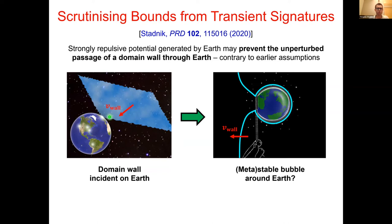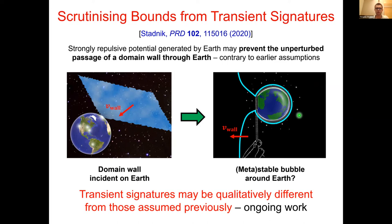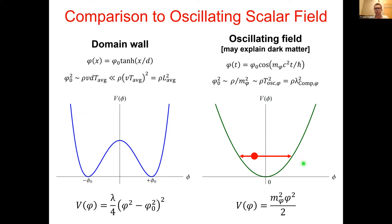In particular, as a wall approaches Earth, instead of simply passing through, part of the wall in closest contact with Earth could start to wrap around Earth and pinch off. The rest of the wall could pass around Earth while a film or bubble surrounding Earth remains. This bubble could be either stable or metastable; if metastable, it would oscillate a number of times before collapsing to Earth's center and radiating energy as relativistic scalar particles. The transient signatures sought previously may therefore be qualitatively different — a question requiring detailed numerical simulations.